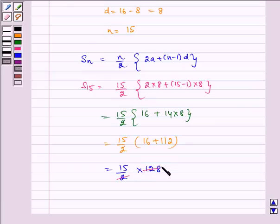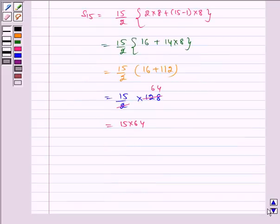Now, 128 gets cancelled by 2, so we get 64, which is equal to 15 into 64, which is equal to 960.